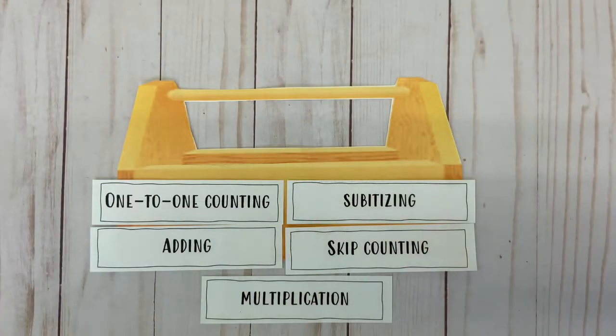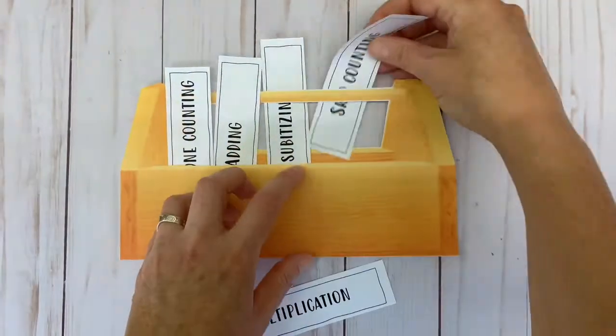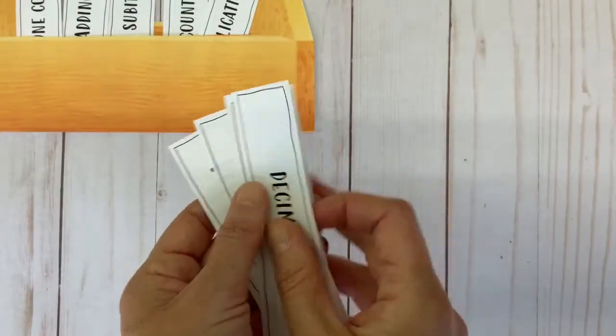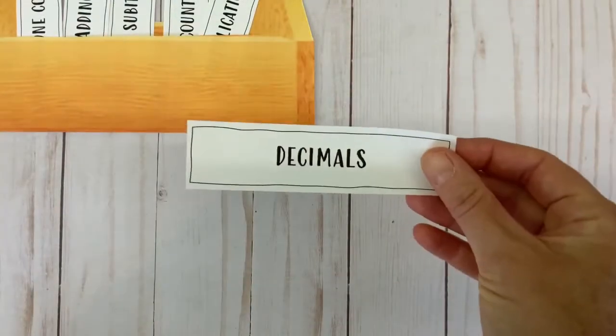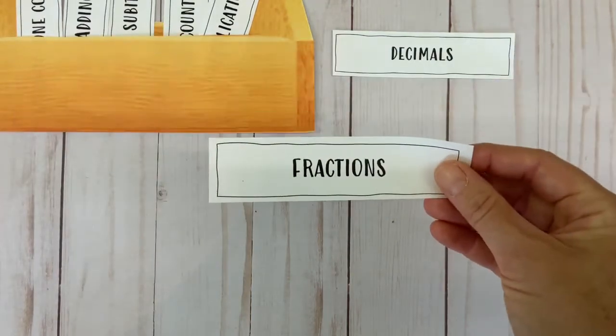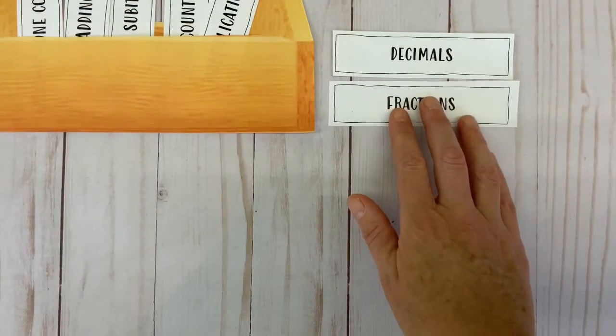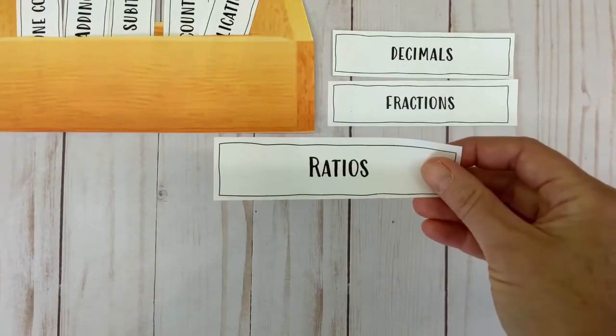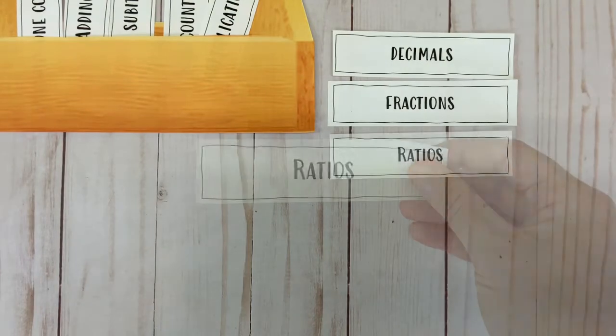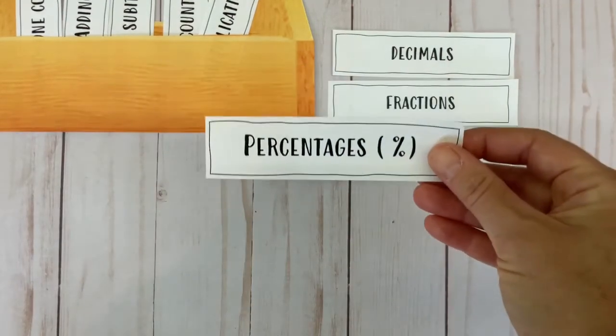Let's take a look, shall we? First up are decimals. Next we have fractions. Then we have ratios, part-to-part ratios that is, and finally percentages.